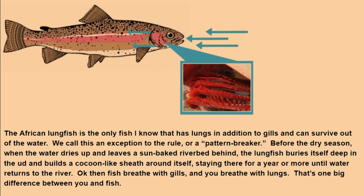The African lungfish is the only fish that has lungs in addition to gills and can survive out of the water. We call this an exception to the rule or a pattern breaker. Before the dry season, when the water dries up and leaves a sun-baked riverbed behind, the lungfish buries itself deep in the mud and builds a cocoon-like sheath around itself, staying there for a year or more until water returns to the river. Fish breathe with gills and you breathe with lungs — that's one big difference between you and fish.